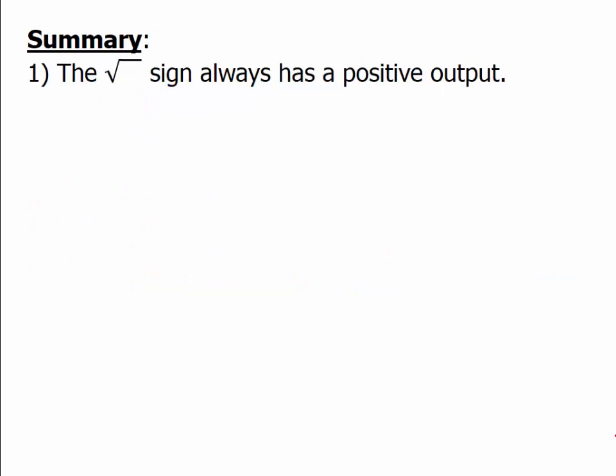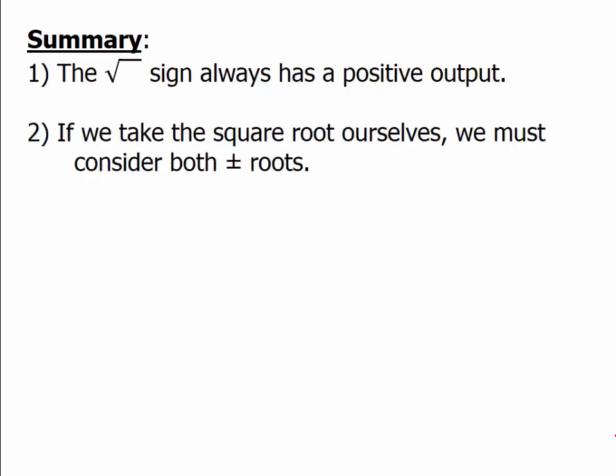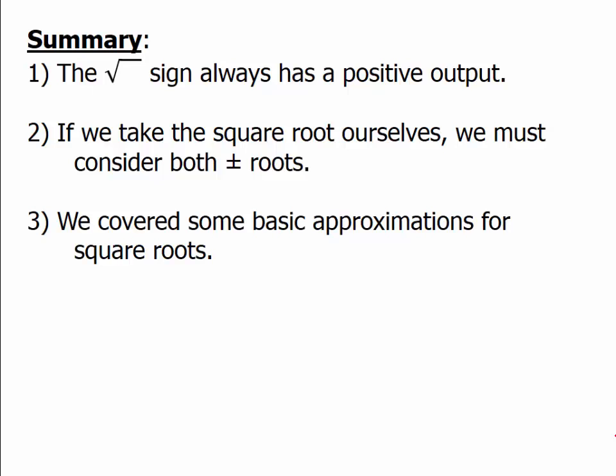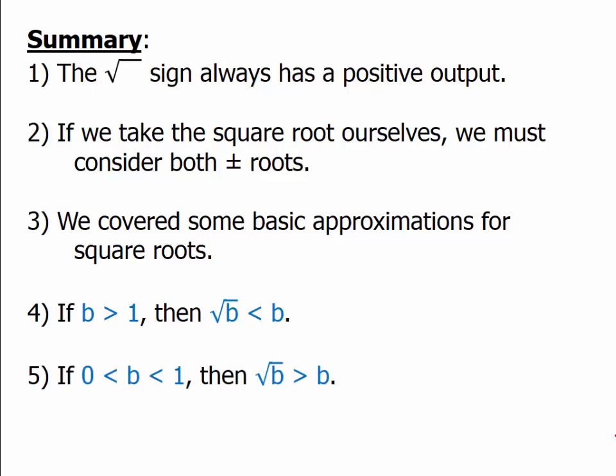In summary, that sign — most people call it the square root sign, but really it is the principal square root sign — always has a positive output. If we take the square root ourselves, we must consider both the plus and the minus root. If the problem prints the square root sign, we're dealing with the positive root only. If we wind up with a variable squared in our own algebra and take the square root ourselves, we have to consider both positive and negative. We covered basic approximations for square roots, and we discussed that if b is greater than 1, squaring makes it bigger while taking the square root makes it smaller; and if b is a fraction between 0 and 1, squaring makes it smaller while taking the square root makes it bigger.